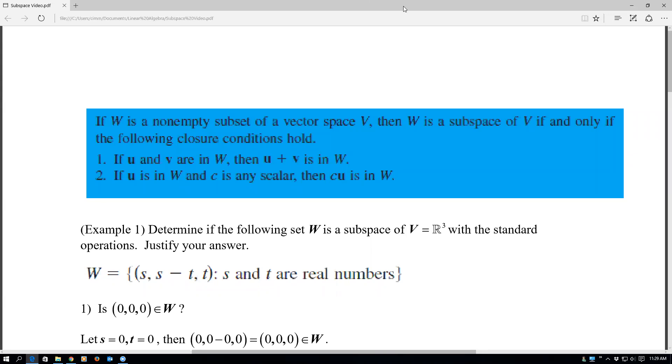Essentially, a subspace is a vector space, but instead of proving all ten properties of a vector space, if we have a subset of a known vector space, then we only have to prove essentially two conditions to show that something is a subspace.